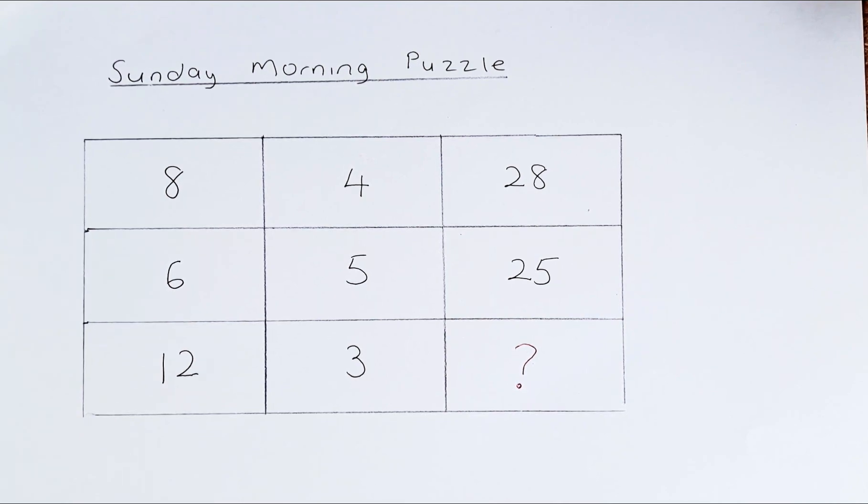Similarly, for the second row, we have 6, 5, and 25. What we do is take 6 multiplied by 5, that gives you 30, and then we minus 5. So 30 minus 5, the answer is 25.